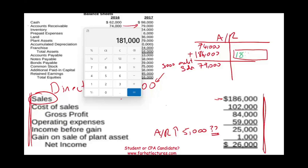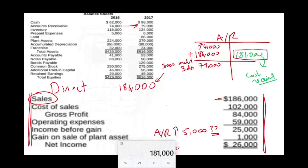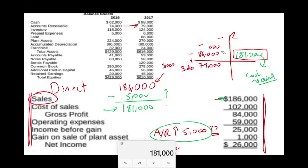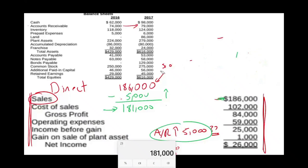What does that mean? It means I received in cash — this is cash received from sales — 181,000. Although my sales shows 186,000, I have to report it at 181,000. Simply put, 181 represents the deduction of the increase in accounts receivable. Because accounts receivable overall went up by 5,000, I have to reduce my sales to 181,000. My sales on a cash basis is 181,000; however, on an accrual basis it is 186,000.